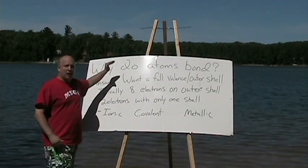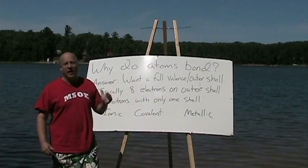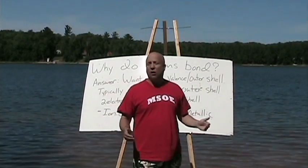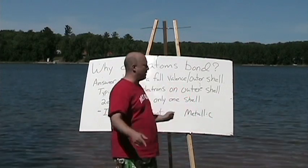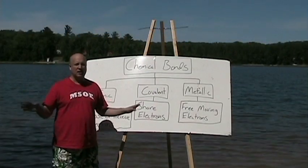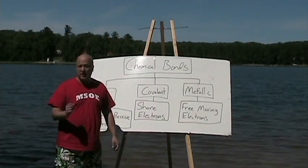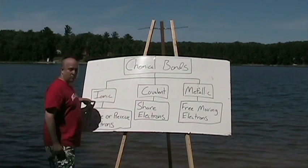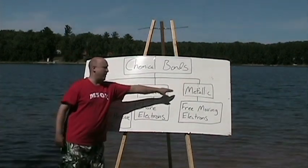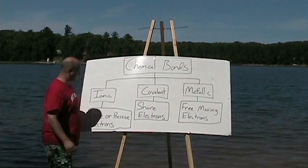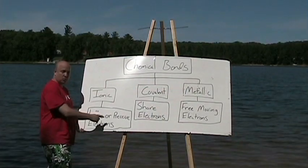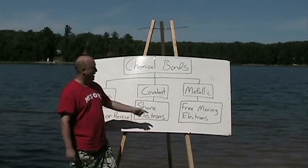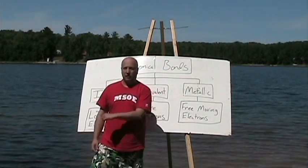Atoms bond because they want a full valence shell — a full outermost shell. There are three main types of chemical bonds: ionic bonds, covalent bonds, and metallic bonds. Ionic bonds lose or receive their electrons. Covalent bonds share their electrons. And metallic bonds have free-moving electrons.